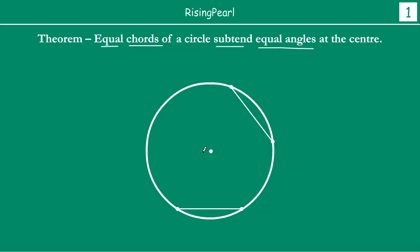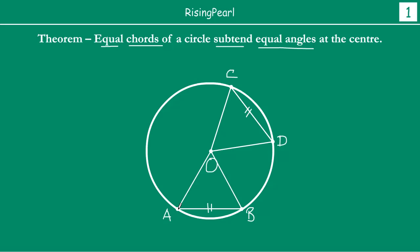Let us understand what this theorem is really telling us. Let us say this is our circle with center O, and we have drawn two chords — let us say this is chord AB and this is chord CD. We have drawn two chords and both chords are equal in length. What the theorem is telling us is these two equal chords actually subtend equal angles at the center of the circle. This means if you join AO and BO you get one angle, and similarly if you join CO and DO you get another angle.